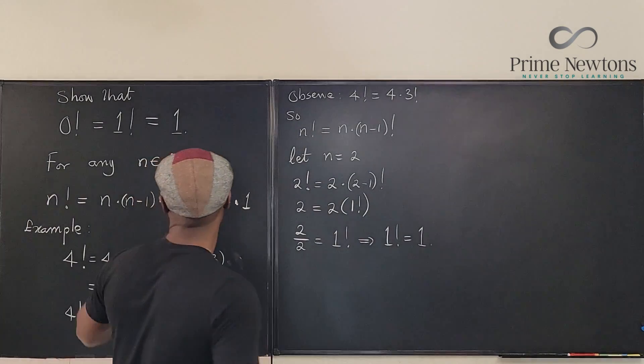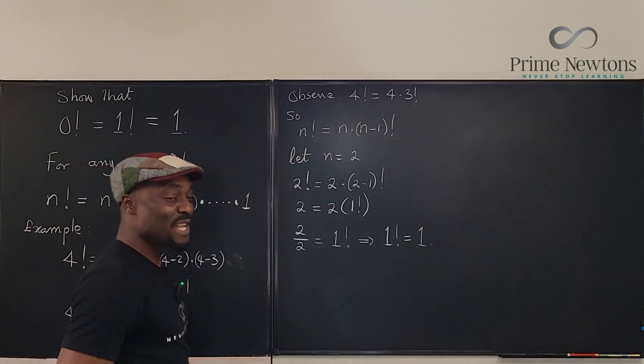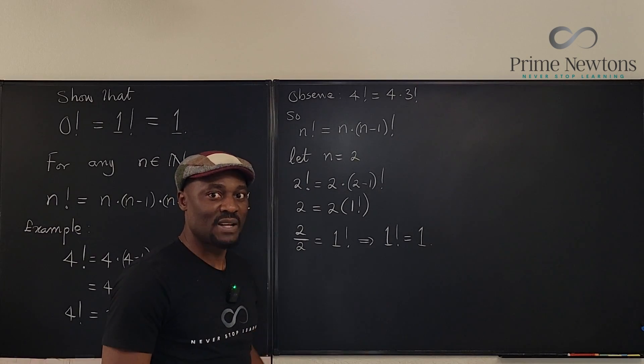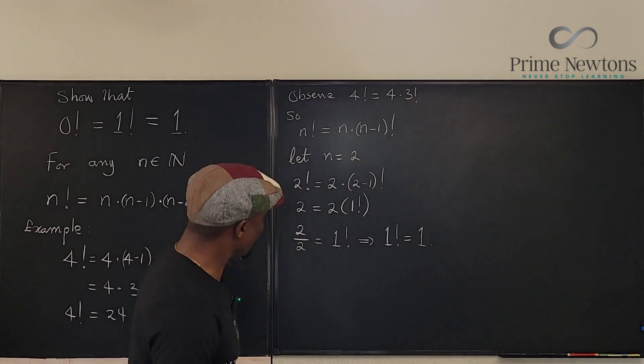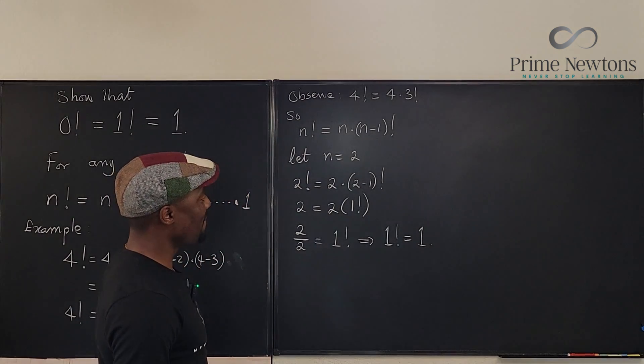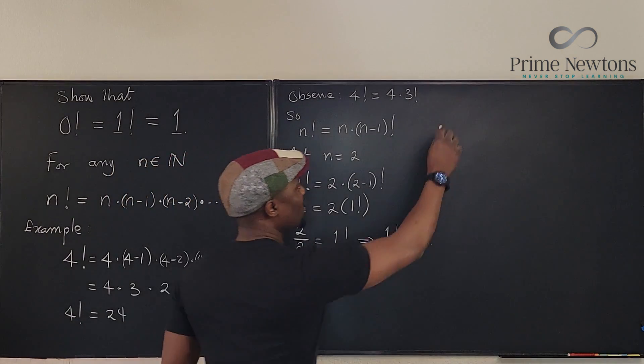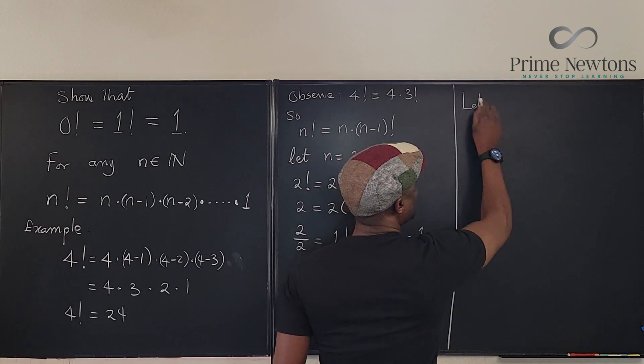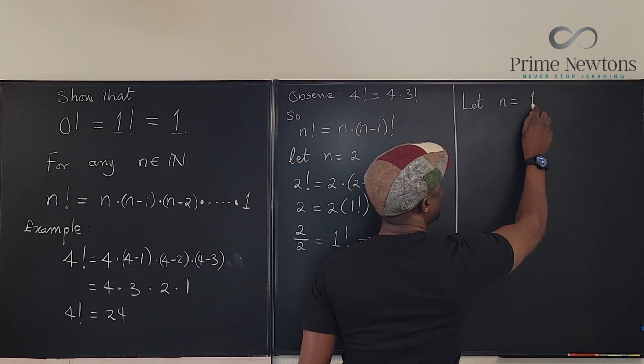So we have shown that 1 factorial is 1, but we need to show using this same strategy, I'm sure you can see where I'm going now, to show that 0 factorial is equal to 1. So the next thing we're going to do is let's go to the second part.